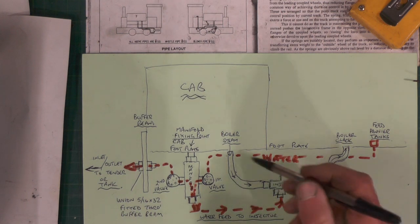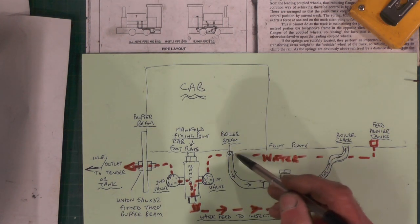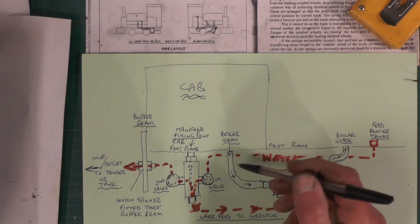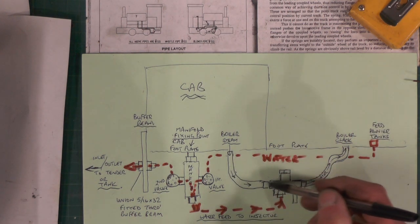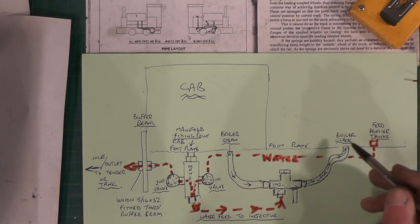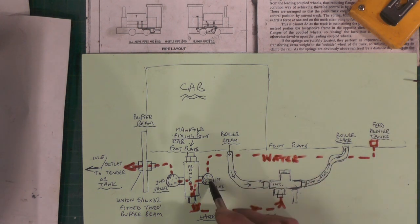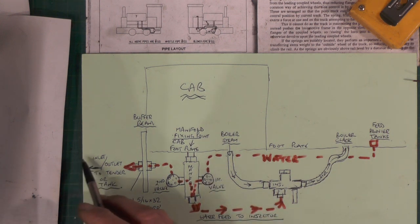What's going to happen is I'm going to have one pipe bringing the steam from the boiler from that union I made in another video. That's going to couple up to the injector. Then I'm going to make another part that's going to go to the clack valve. Then the feed from the pannier tanks is going to come across here to this first valve.